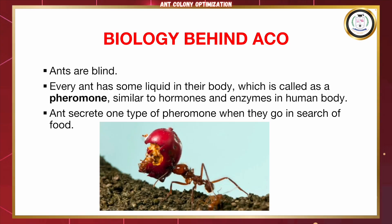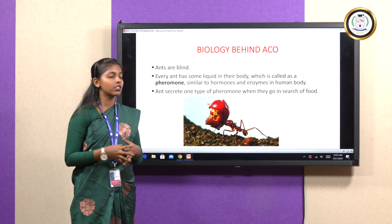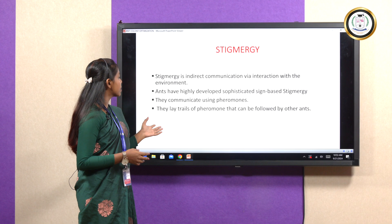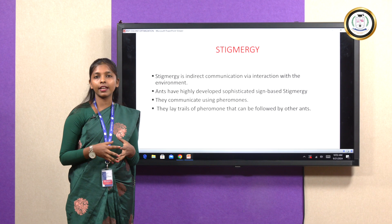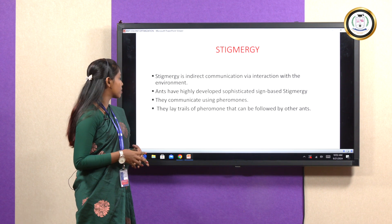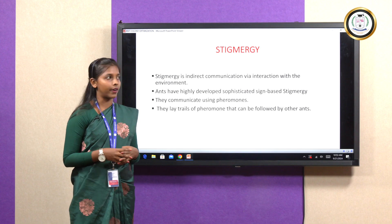The other ants follow the path where pheromone production is done and find the food. Ants secrete one type of pheromone when they go in search of food. Stigmergy is the indirect connection via interaction with the environment. Ants have highly developed sophisticated sign-based stigmergy — they communicate using pheromones and lay trails of pheromones that can be followed by other ants.